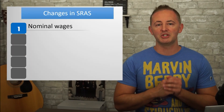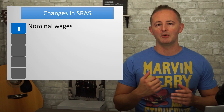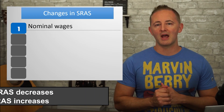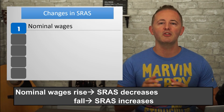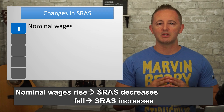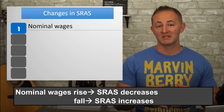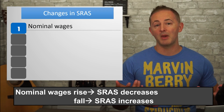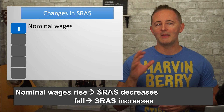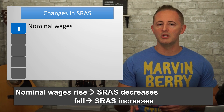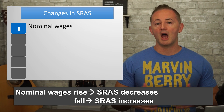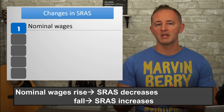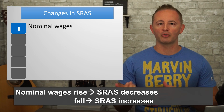Let's finish up this lesson and identify our shifters of the SRAS curve. First up, and most significantly, is changes in nominal wages. When nominal wages rise, firms can't afford to hire as many workers, so the SRAS curve shifts left, since this obviously impacts how much can be produced. On the other hand, when nominal wages fall, firms can hire more workers, shifting the SRAS curve to the right.